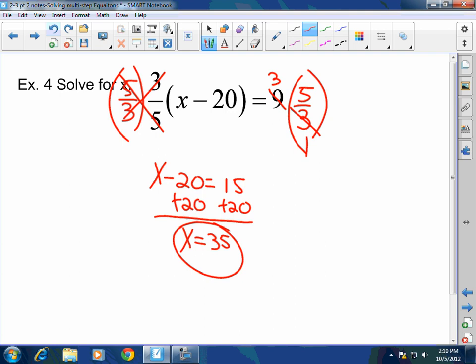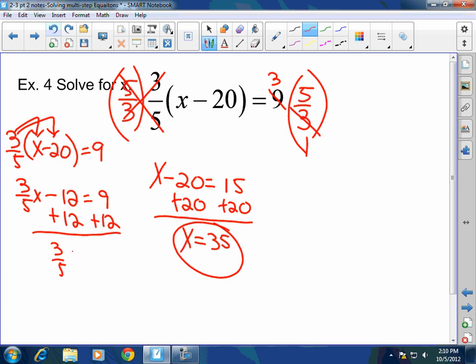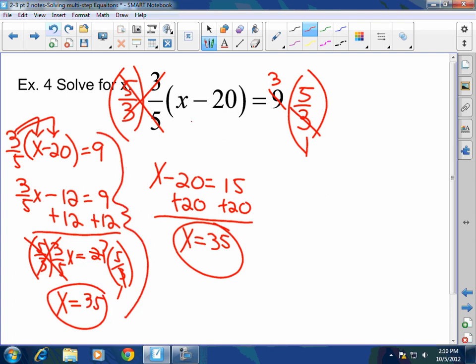Now, the long way, you would have had to do it like this. You are allowed to do it this way. You are. I highly recommend you do it the easy way, but you could have distributed. That's going to be 3 fifths X minus 3 times 20 is 60 divided by 5. That's 12. Equals 9. Add the 12. 3 fifths X equals 21. Multiply by 5 thirds to both sides. Those cancel. X equals 7. So that's 35. Either way, you want to do all of this or just go from here to there? The first one is a lot easier, right? All right, my brothers.